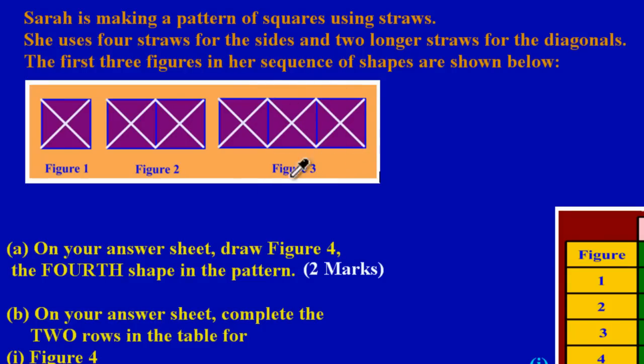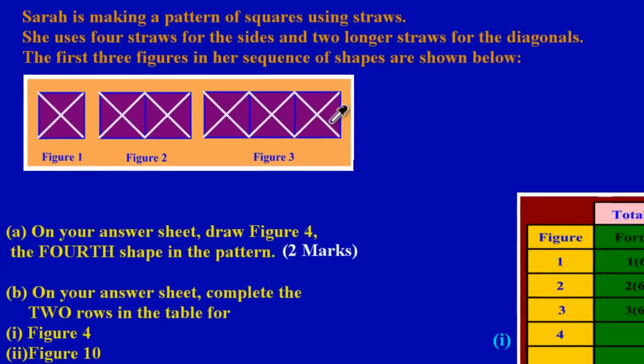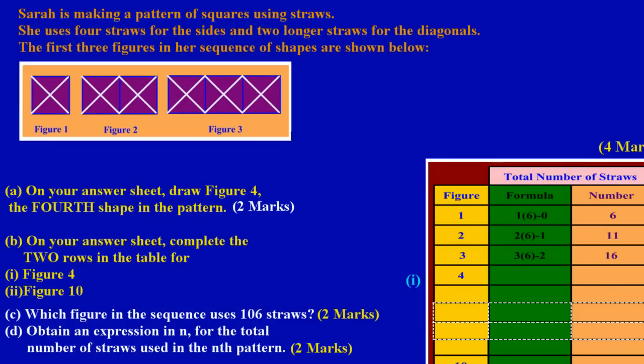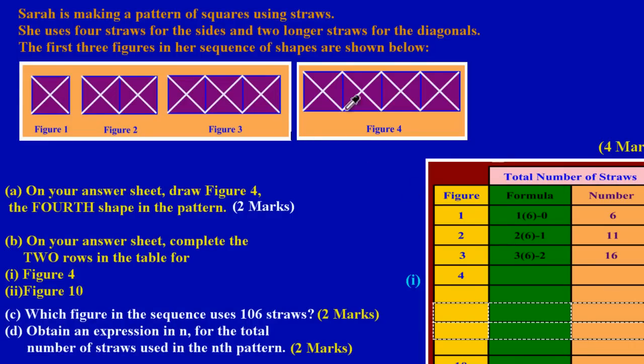This simply means to get my figure number 4, I would have to attach another square to figure 3. So here, my friends, we have our figure number 4, and as we have stated before, it's as if I've added another box, another square, to figure number 3 to get my figure number 4. That's what your fourth figure should look like in the sequence.